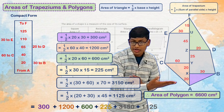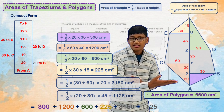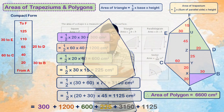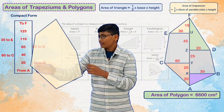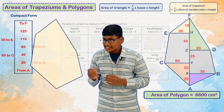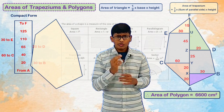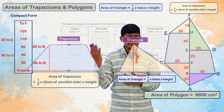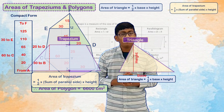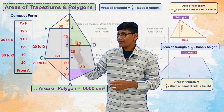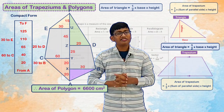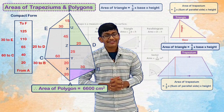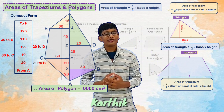This 6600 cm² is nothing but the area of the polygon we first discussed about. We calculated this in a simple way using only two formulas: area of triangle and area of trapezium. This is how we calculate the area of this type of polygon using one or more formulas. Hope you enjoyed this video. Thank you.